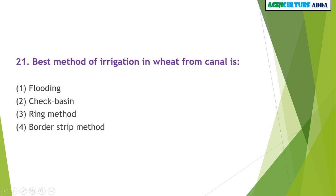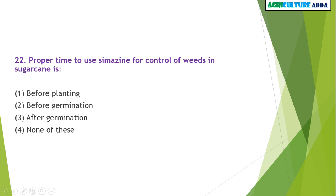The percentage of sand in clay soil is 30%. The proper method of application of DAP is below the seed in furrow. The best method of irrigation in wheat for kharif is border strip method.